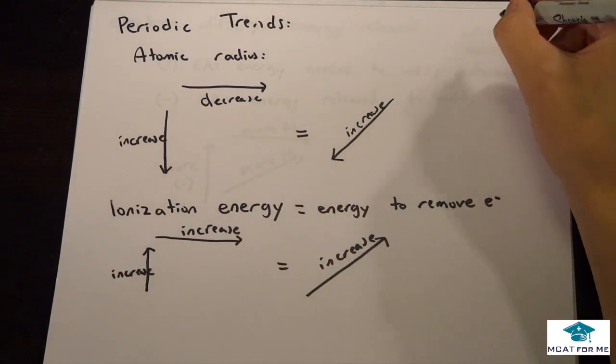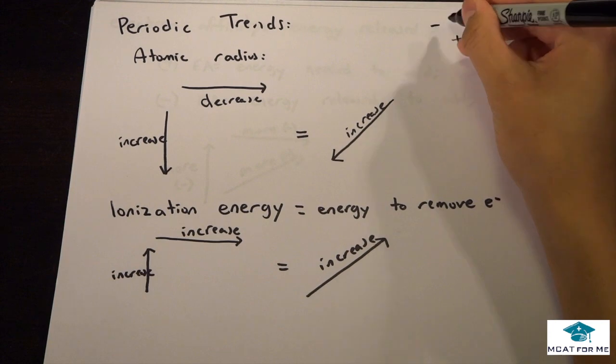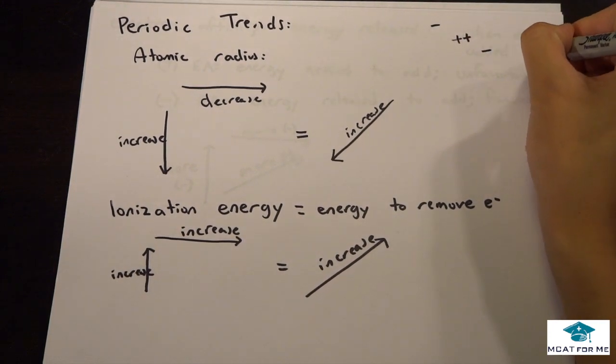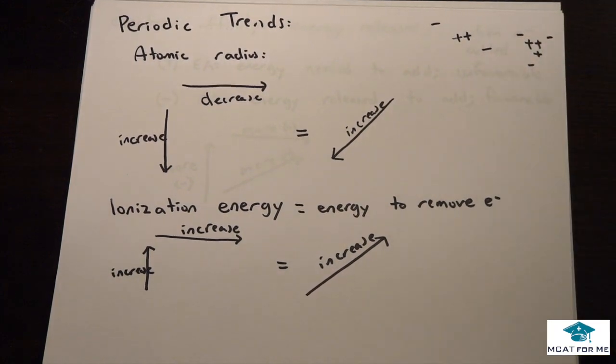Say you have this on the inside and you have negative, negative, right? Well now if you add a third one, well now it's going to pull it in much further. All the electrons are going to want to come much further in.